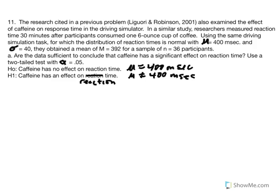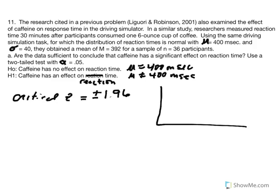To proceed, the first step is to identify the research and null hypothesis — done. The next step is to set the parameters: identify the critical z value. Since we're conducting a two-tailed test at alpha equal to 0.05, we know the critical z value is 1.96. The average reaction time equals 400 for the untreated population, and our sample mean equals 392.